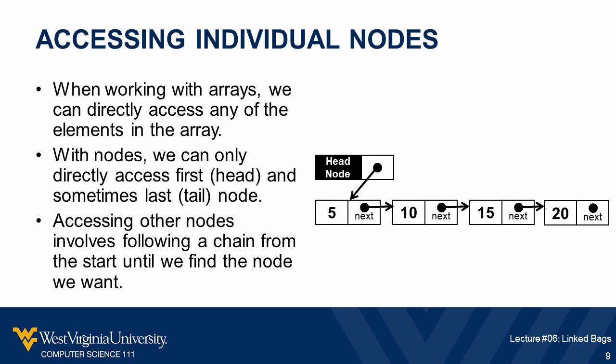Another key difference between array-based and node-based implementations is time complexity. With an array-based data structure, if we're trying to retrieve any individual item, the array allows us to go directly to that location. With a node-based implementation, we can normally go directly to the head node and sometimes the tail node, but to get to any nodes in between, we have to follow a chain from the first or last node. That requires more steps, so array-based implementations tend to have better time efficiency.